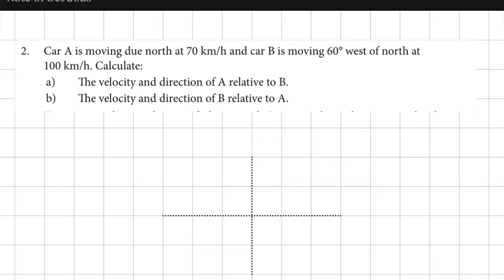The statement reads as follows: Car A is moving north at 70 kilometres per hour, and Car B is moving 60 degrees west of north at 100 kilometres per hour. We have to calculate, one, the velocity of A relative to B, and two, the velocity of B relative to A.